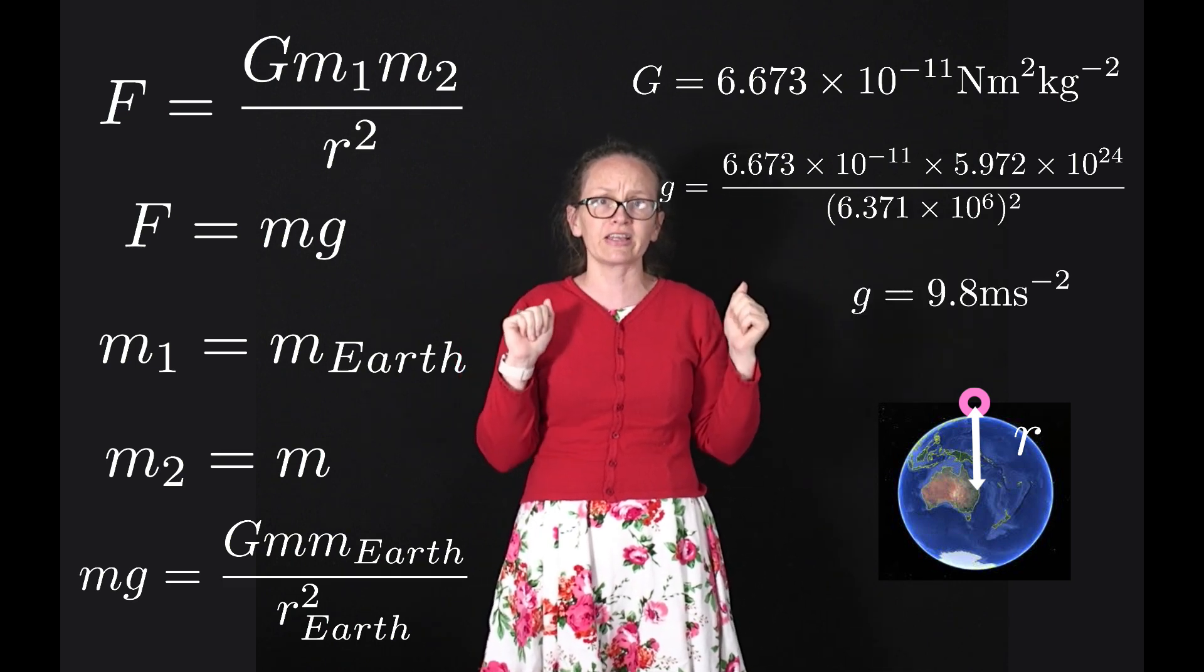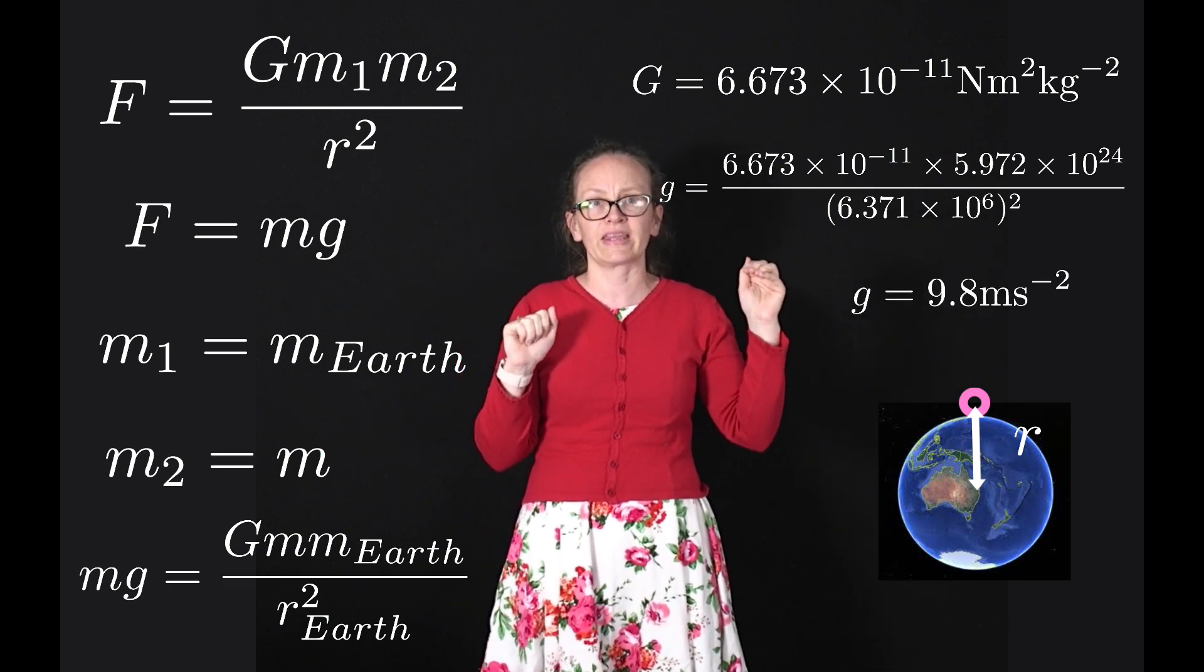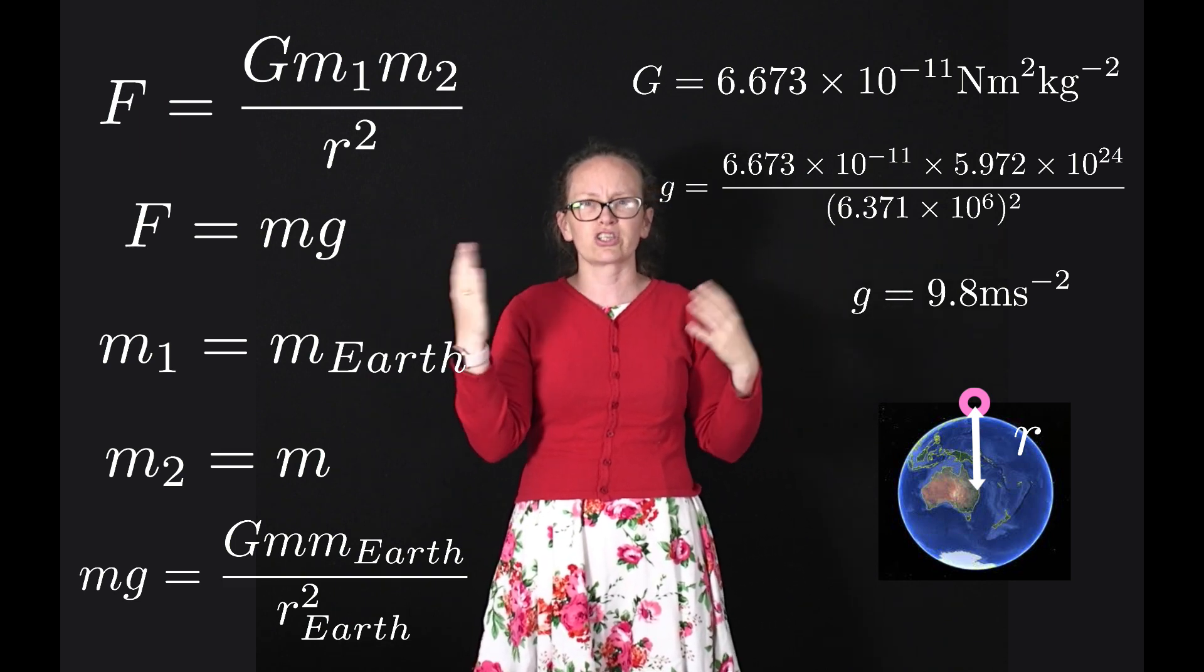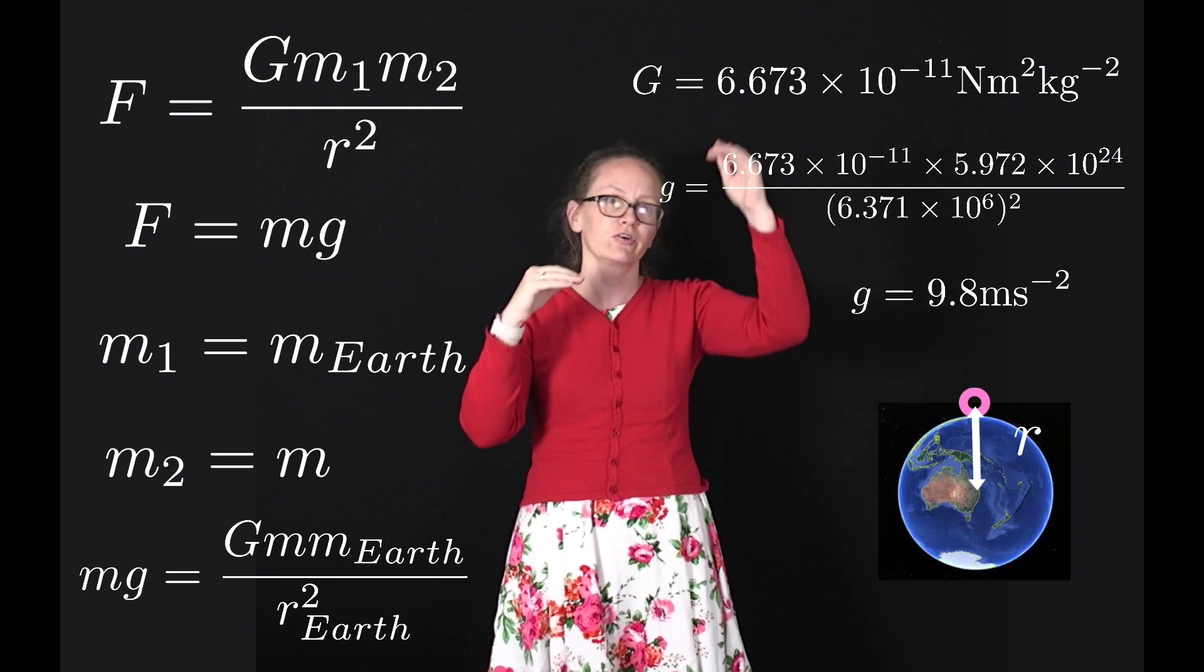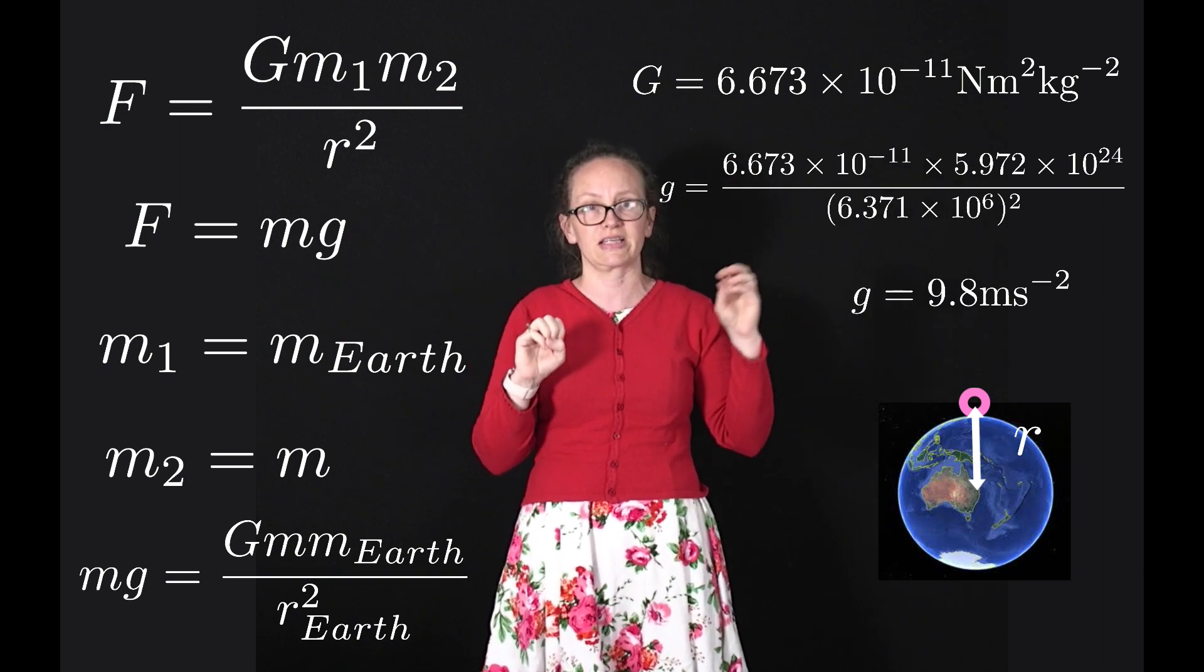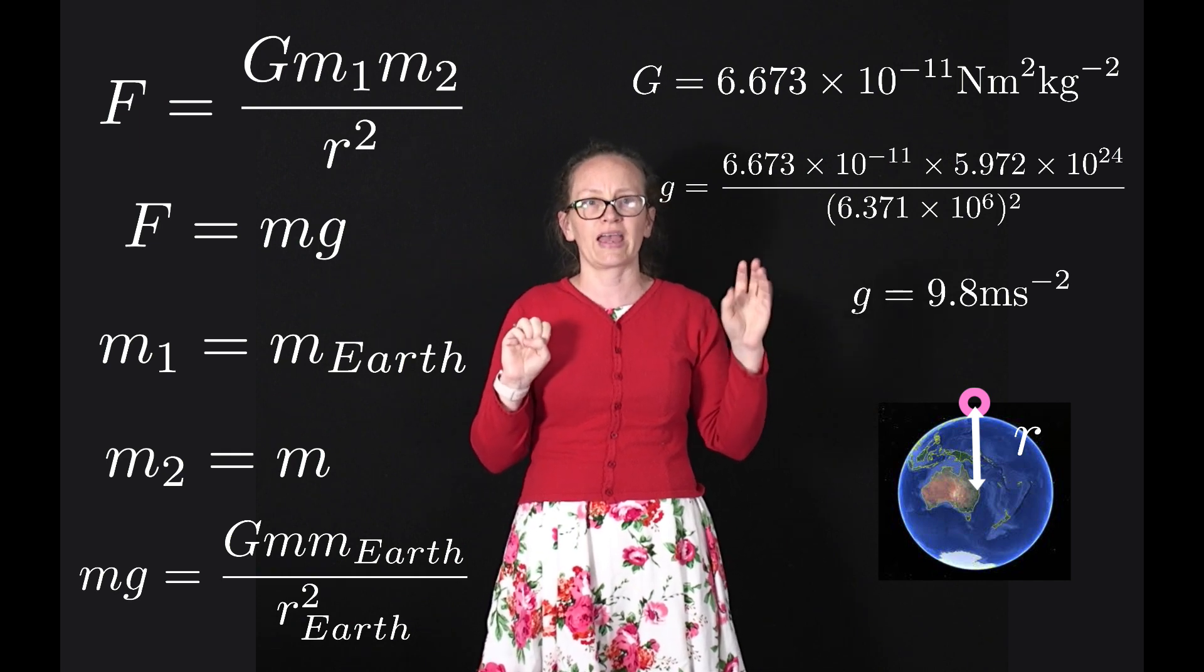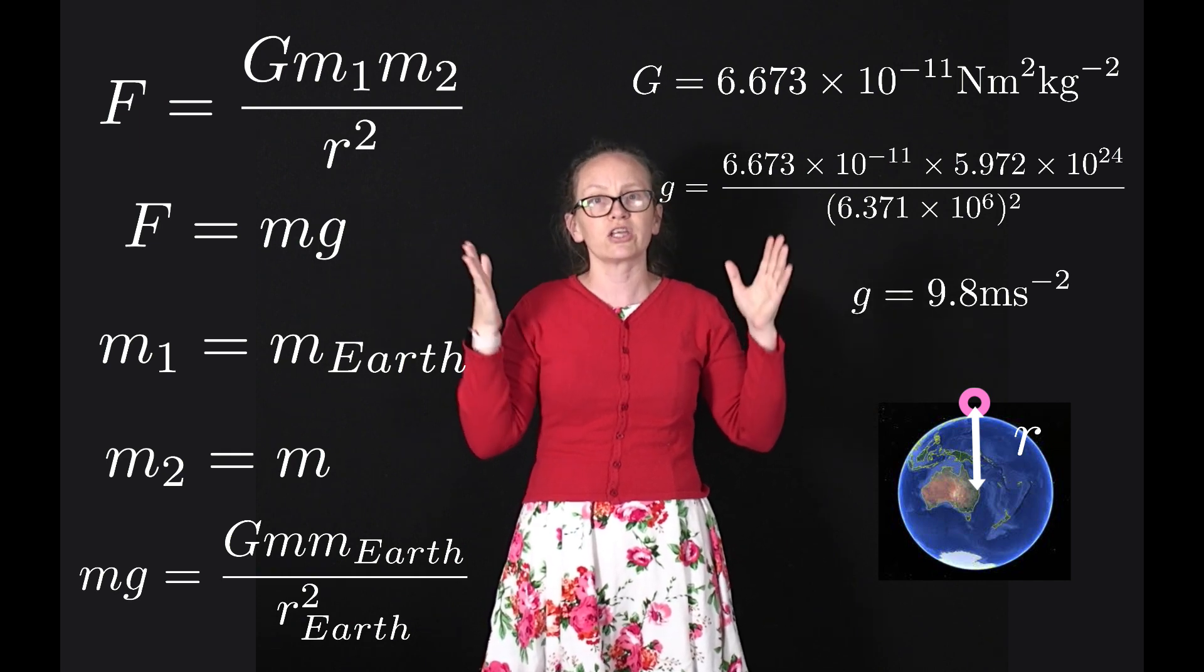When we do that on the calculator, we get 9.818 newtons per kilogram. Newtons per kilogram is the same as an acceleration—it's a force divided by a mass, so that's meters per second squared. So g equals 9.8 meters per second squared, which is what we've been using for it all along.